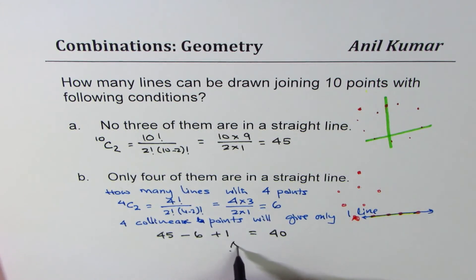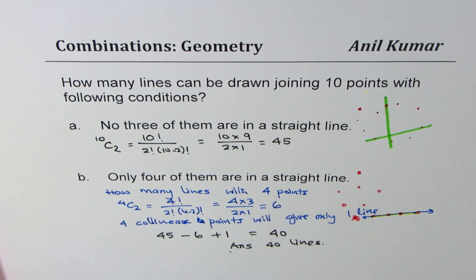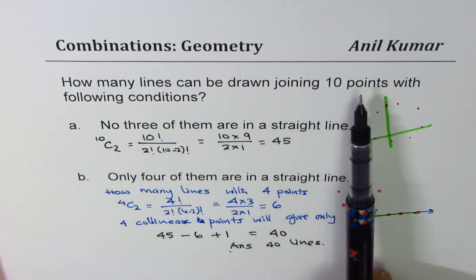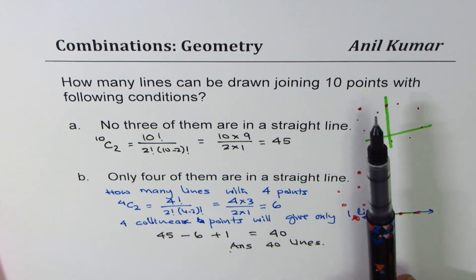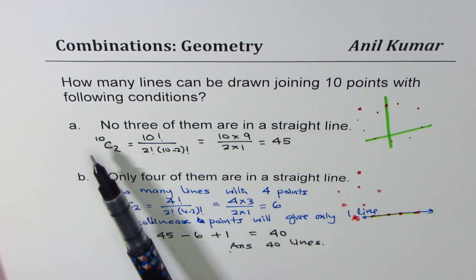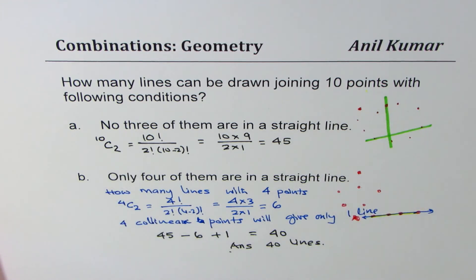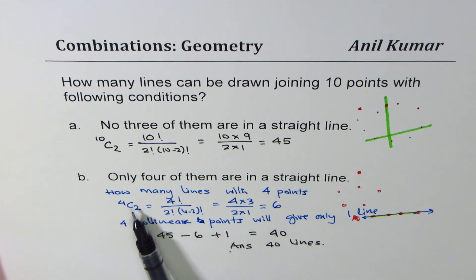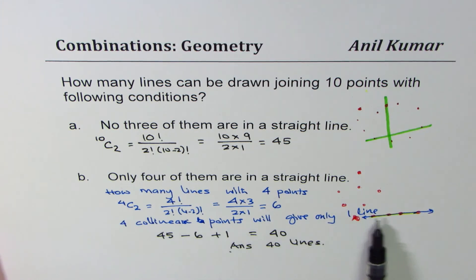So the answer is 40 lines. Remember, you can form a line using two points, so the number of lines which can be formed from n points is nC2. If you have some collinear points, that number has to be subtracted, and then you add 1 for the single line which can be formed by those collinear points to get your final answer.